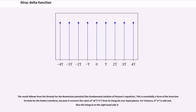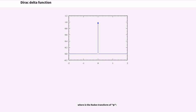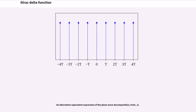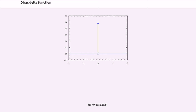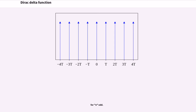This is essentially a form of the inversion formula for the Radon transform, because it recovers the value of φ(x) from its integrals over hyperplanes. For instance, if n is odd, the integral on the right-hand side involves the Radon transform of φ. An alternative equivalent expression of the plane wave decomposition exists for both n even and n odd cases.